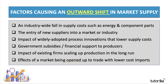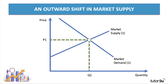Fourth, government financial support in the form of subsidies to producers can also increase market supply. Fifth, in the long run we see existing firms scaling up production, moving down their long-run average cost curve and producing at lower cost. And sixth, a good example of how market supply can increase is when an industry is opened to trade — particularly if other countries have a comparative advantage and can supply at a lower price.